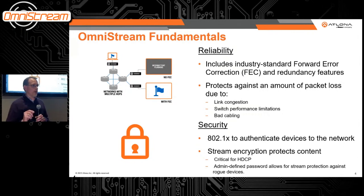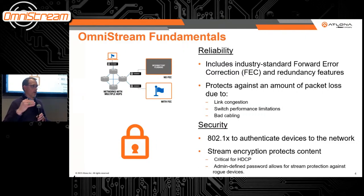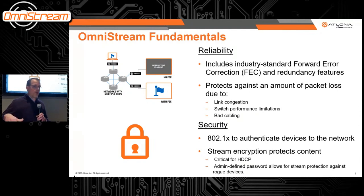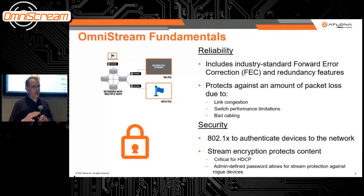Security is also a huge priority. In addition to normal network protocol security such as 802.1X and secured network interfaces, we encrypt all our streams, which is critical for supporting HDCP and guarantees customers that their content is private on the network. Uniquely, OmniStream supports per-stream encryption keys — so if some encoders are carrying sensitive content, you can encrypt those streams uniquely so that not just any decoder can play back that content.